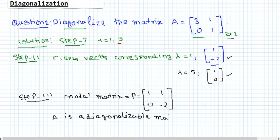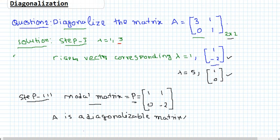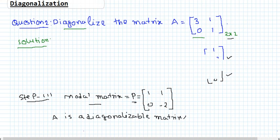Because we can find a modal matrix P whose determinant is nonzero, meaning P has an inverse, the given matrix A is diagonalizable. The diagonal matrix to which A is similar will have the eigenvalues as the principal diagonal entries. Let me erase this part and write the diagonal matrix.